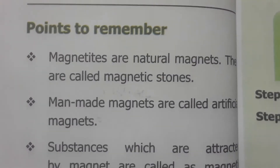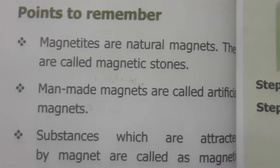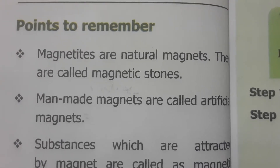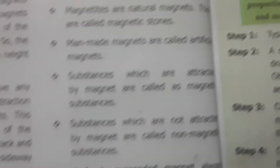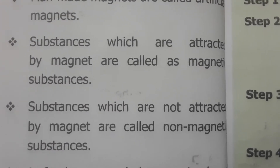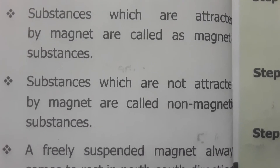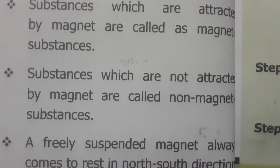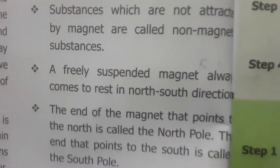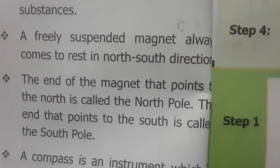Natural magnets are called magnetic stones, and man-made magnets are called artificial magnets. Substances which are attracted by a magnet are called magnetic substances, while substances which are not attracted by a magnet are called non-magnetic substances. A freely suspended magnet always comes to rest in the north and south direction — you should remember this point.